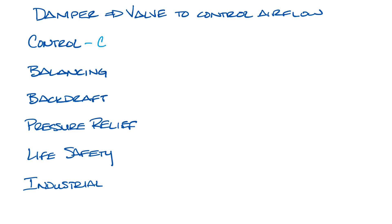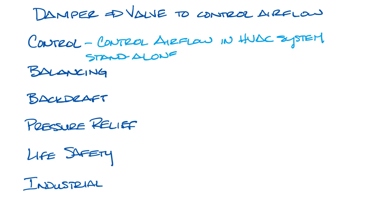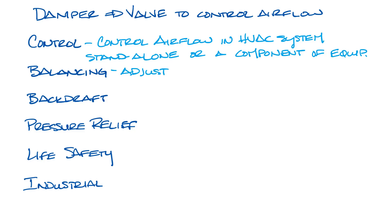Control dampers control the airflow in the HVAC system. These can be stand-alone in the system or be a component of another piece of equipment. Balancing dampers balance the airflow in the HVAC system. Balancing is essentially the process of adjusting the air to deliver the correct amount of airflow into a zone in the system.